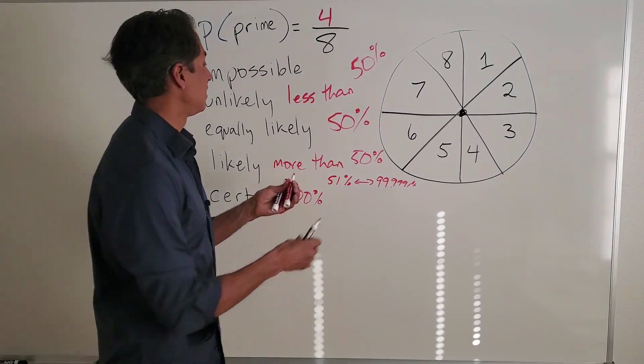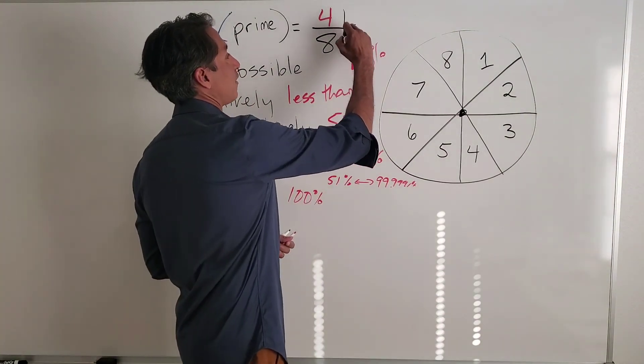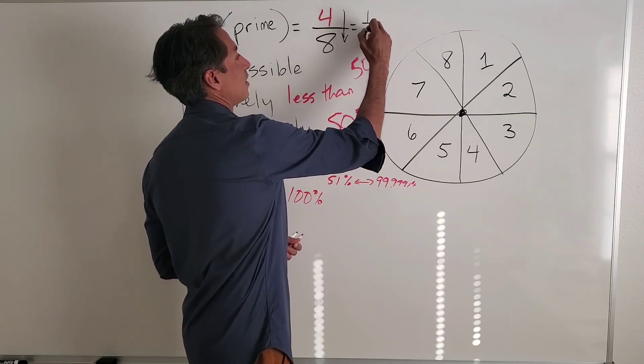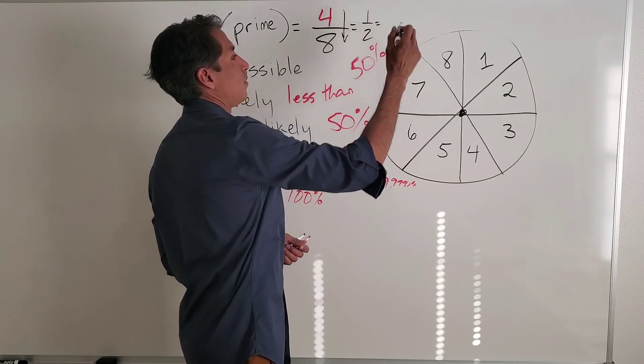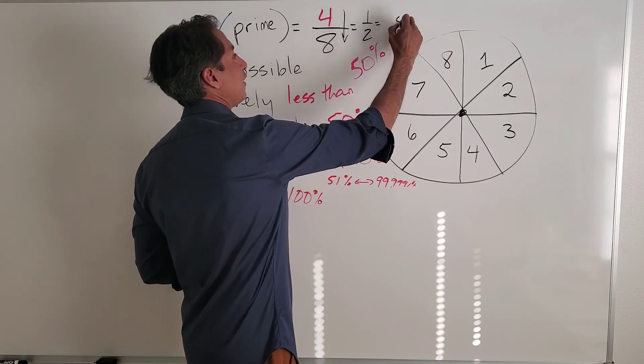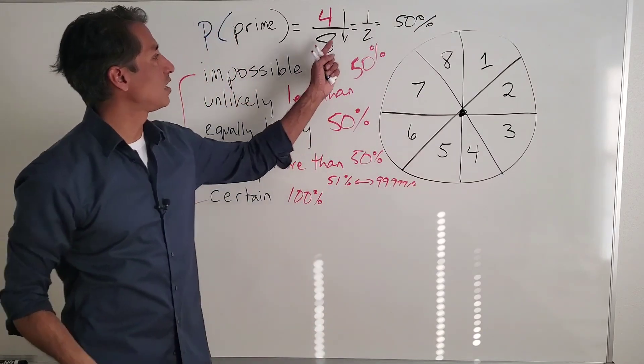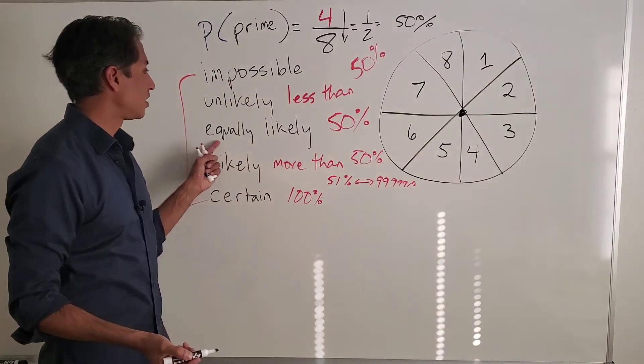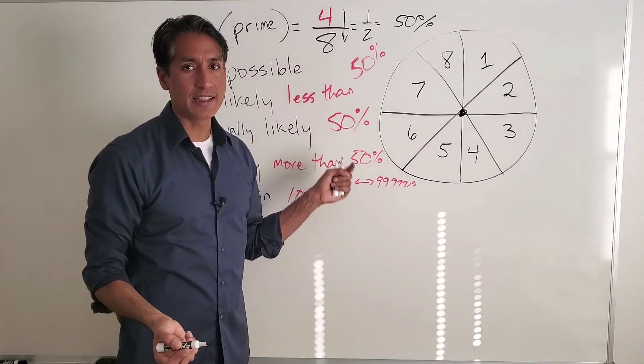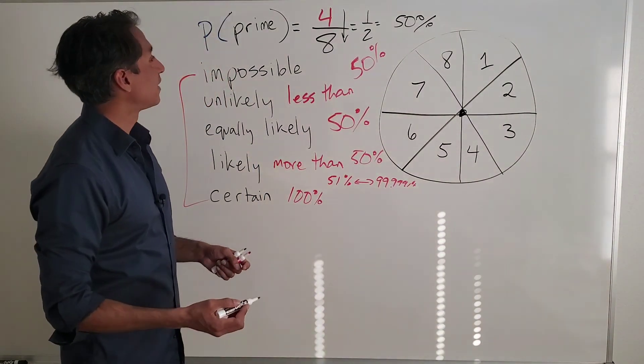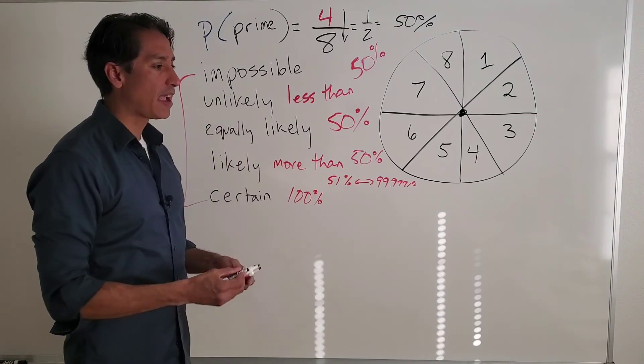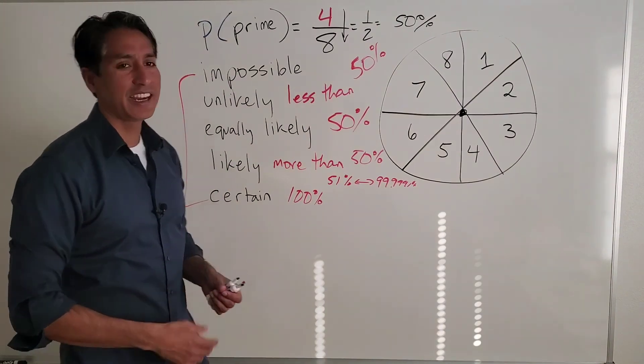Four divided by eight is, well, we read our fraction down or we just reduce it to one half, which is the same as 50%. So I have my fraction, I have my decimal, and then this one is another equally likely. And so I wanted to make sure we at least talk about that guy as well.